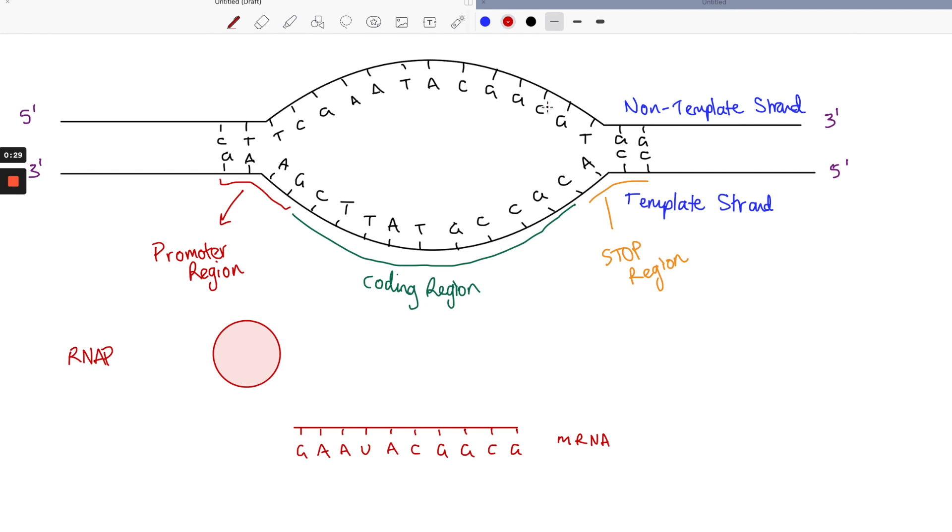We have an enzyme called RNA polymerase that's going to be this little guy over here, and that will be the enzyme that does all of the work of transcribing our DNA code into mRNA code.